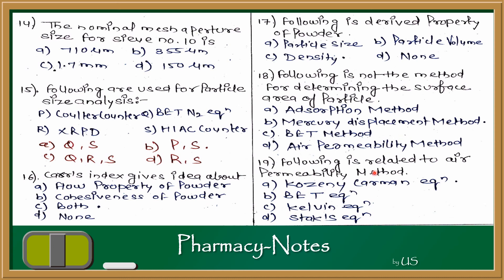Question 19: Which of the following is related to the air permeability method? Options include Kozeny-Carman equation, BET equation, Kelvin equation, and Stokes' equation. BET equation is used in adsorption method. The Kozeny-Carman equation is used in the air permeability method to calculate surface volume. The answer is A — Kozeny-Carman equation.